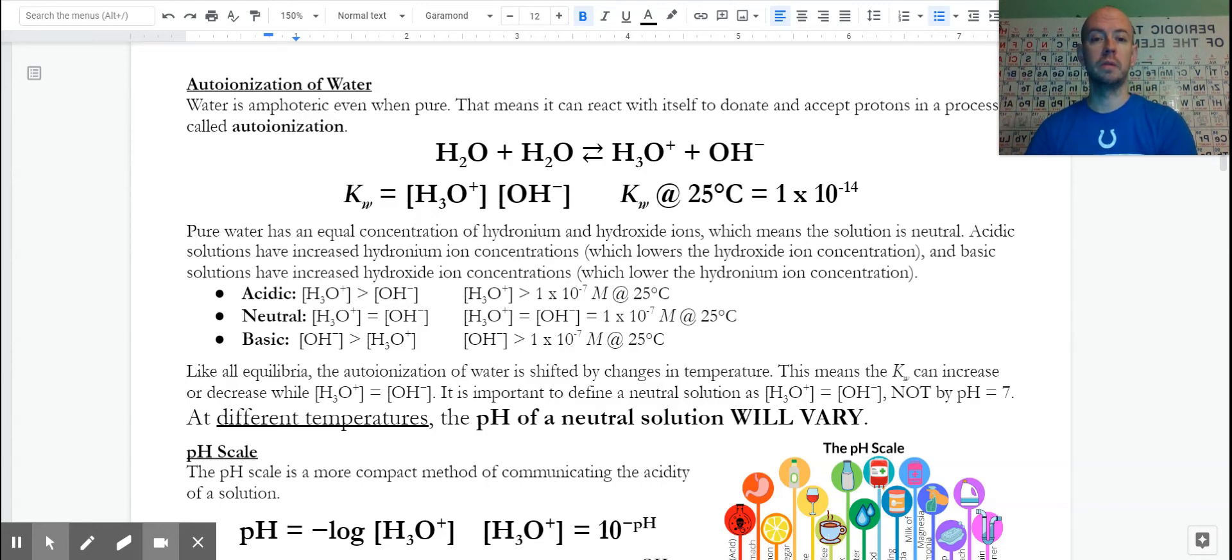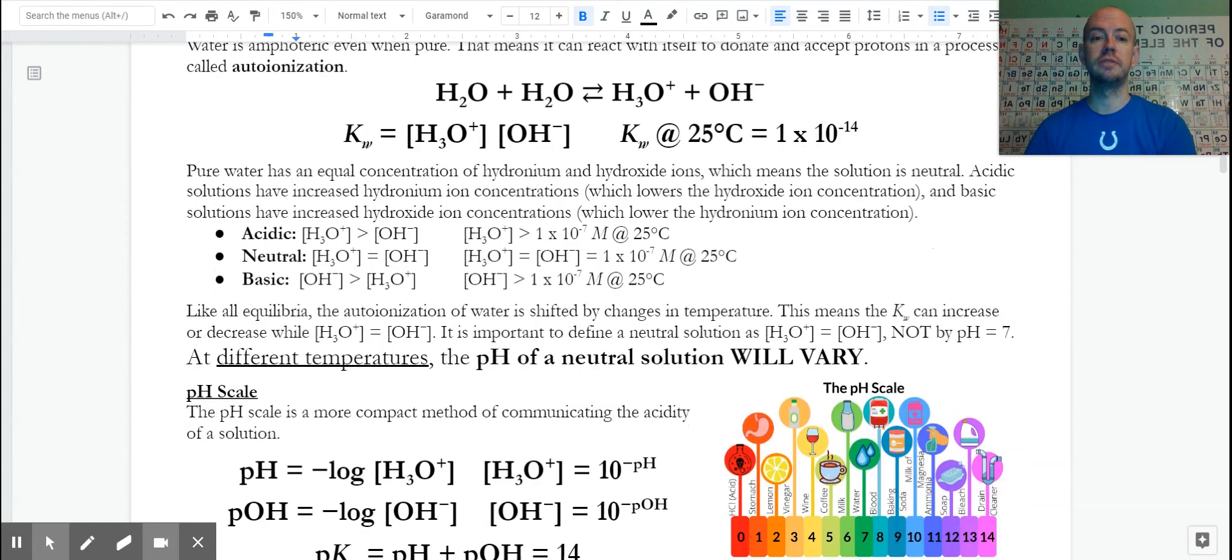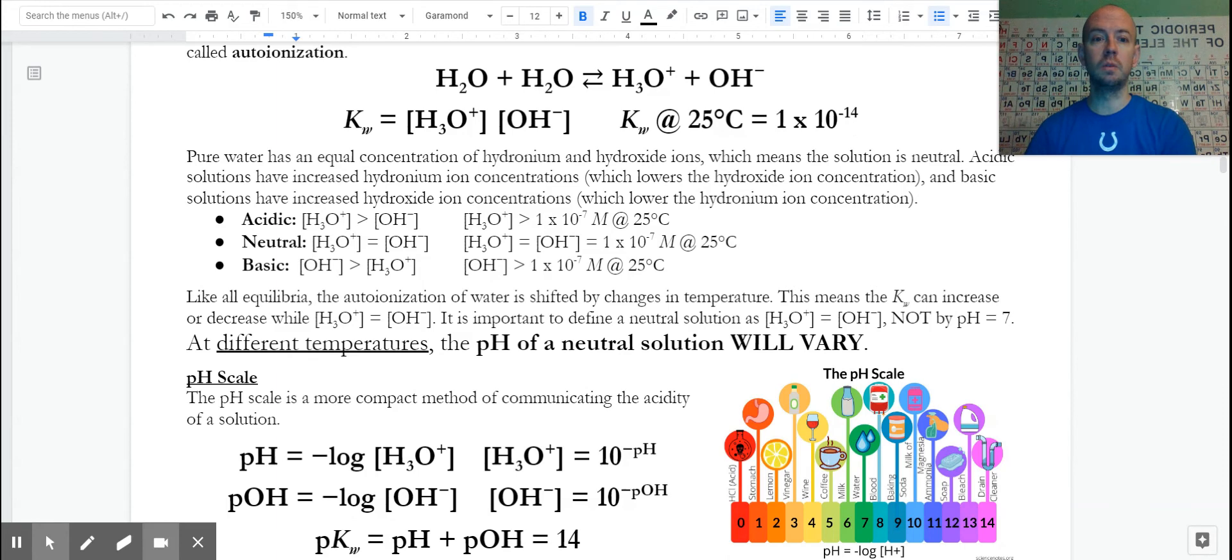These values work when we're at 25 degrees Celsius, and when our KW is 1 times 10 to the negative 14th, but remember for the second, third, fourth time that that can shift. So the definition is those being equal.